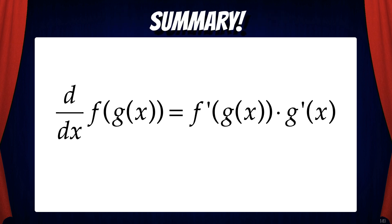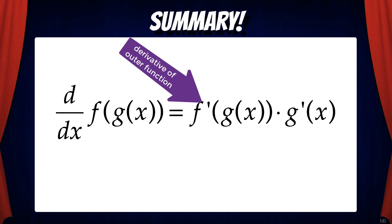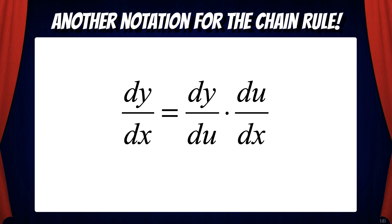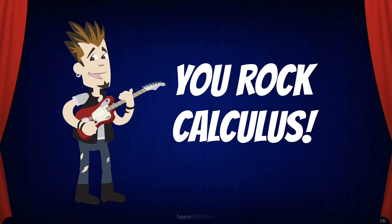In summary, the derivative of f(g(x)) equals f'(g(x)) times g'(x). This means take the derivative of the outer function with the inner function remaining the same, then multiply by the derivative of the inside function. In the next video we're going to look at another form of the chain rule, which says that dy/dx equals dy/du times du/dx. For now, go ahead and practice the techniques from this video. And that's how you rock calculus!